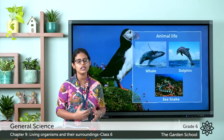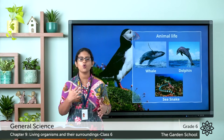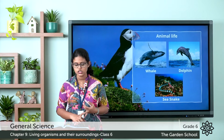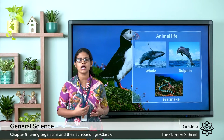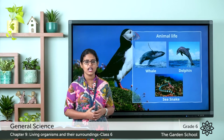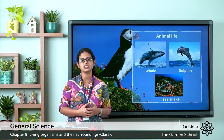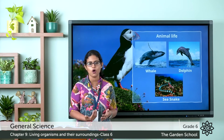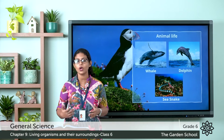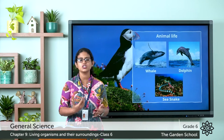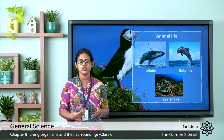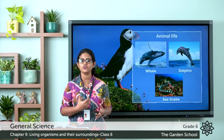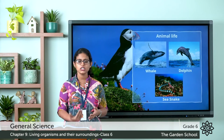Now let's see about the animal life in oceans. Oceans have a rich variety of fish such as sharks, tunas, and sardines. These fish have their own adaptive features that help them survive in oceans — they have a streamlined body and fins that enable them to swim in water. Fish need to breathe, and they use their gills to take in air dissolved in water.